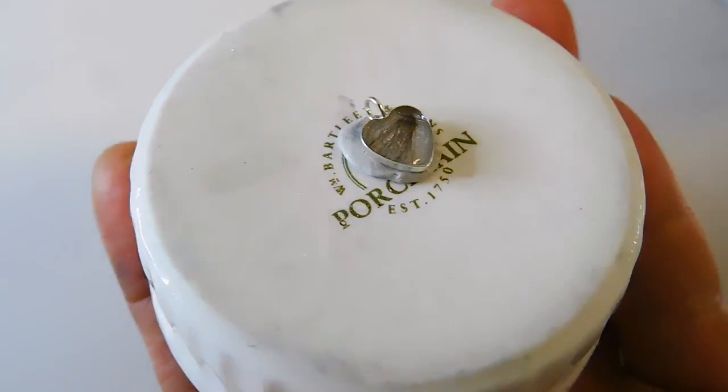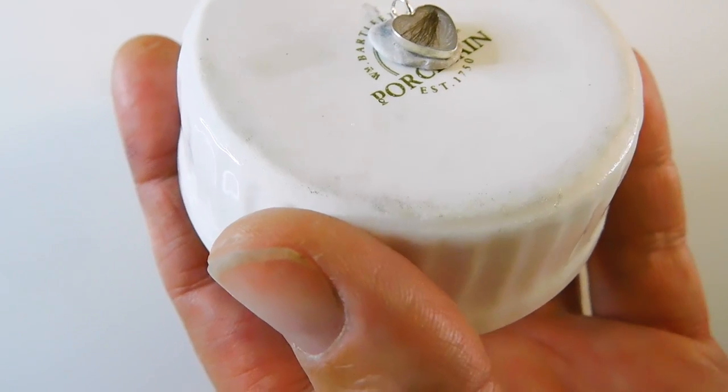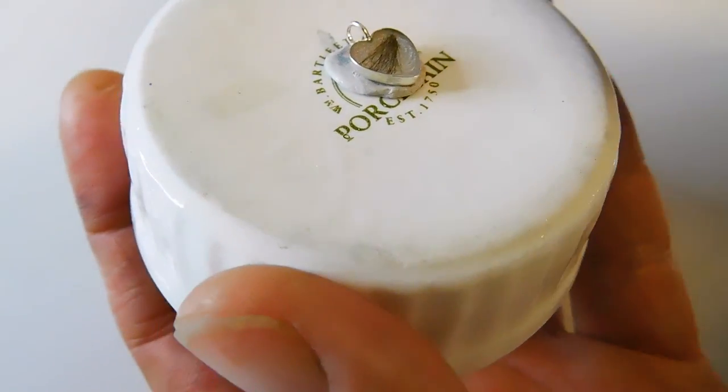Now we're going to add a layer of clear. I add too much here so use the cocktail stick to remove some resin. Give it a few seconds to level then cure.